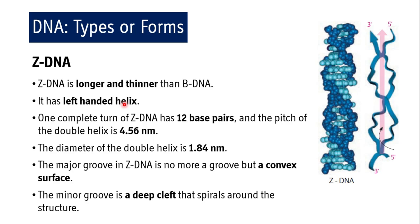Z-DNA is longer and thinner than B-DNA. Its most prominent feature is that it is a left-handed helix, whereas B and A are right-handed. One complete turn of Z-DNA has 12 base pairs and the pitch is 4.56 nanometers. The diameter is 1.84 nanometers. The major groove in Z-DNA is no longer a groove but becomes a convex surface, while the minor groove is seen as a deep cleft.